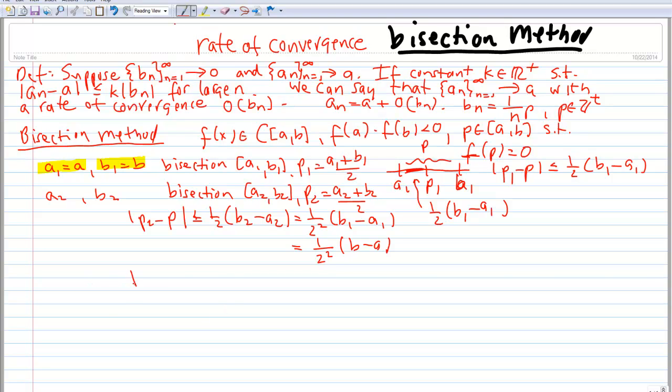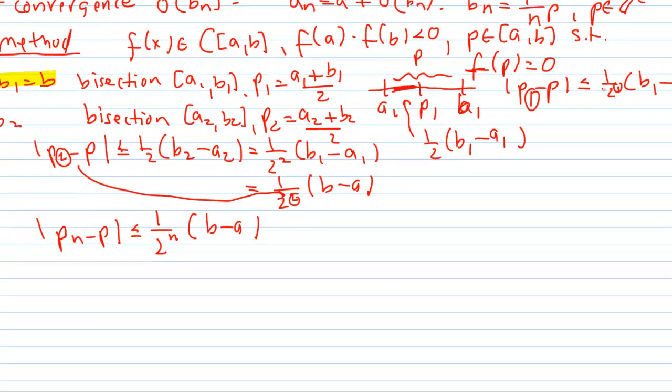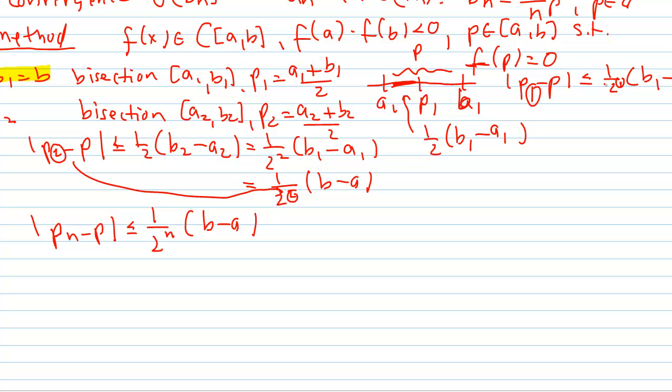In general, what we know is that the absolute value of P sub N minus P is less than or equal to 1 over 2 to the N times B minus A. We see that the subscript here agrees with the power here—the subscript here, which is 1, agrees with the power, which is 1.